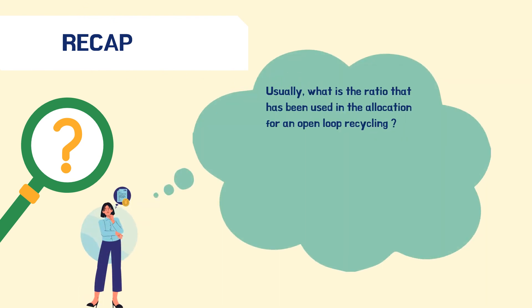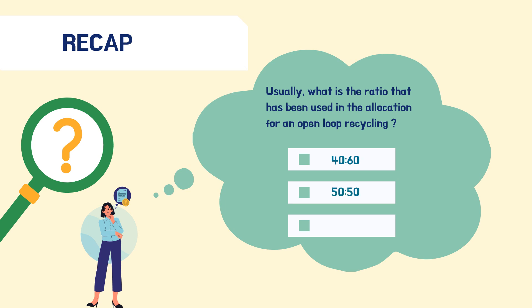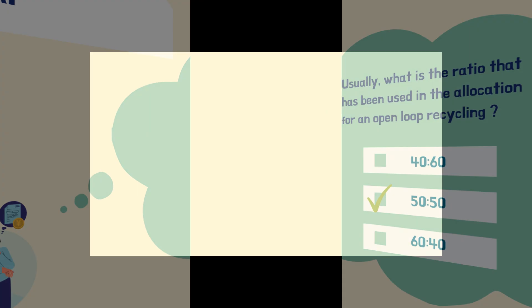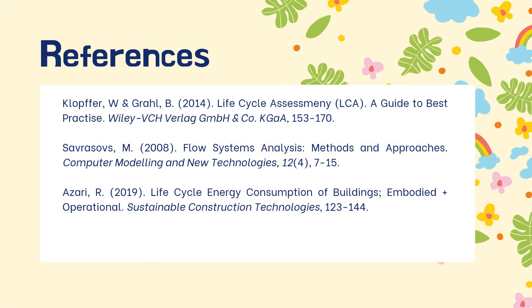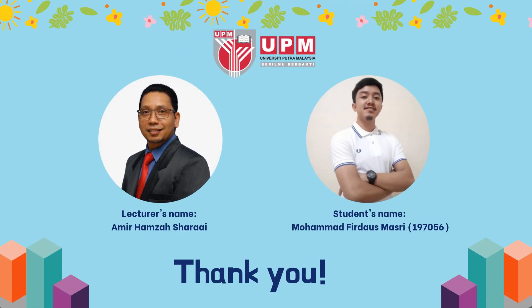We have learned a lot so far, so let's have a quick recap. The question is: what is the ratio used in the allocation for open loop recycling — is it 40:60, 50:50, or 60:40? The correct answer is 50:50, which is distributed in a fair relationship between the delivering and the receiving system.